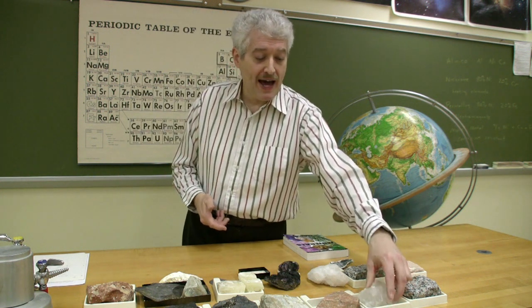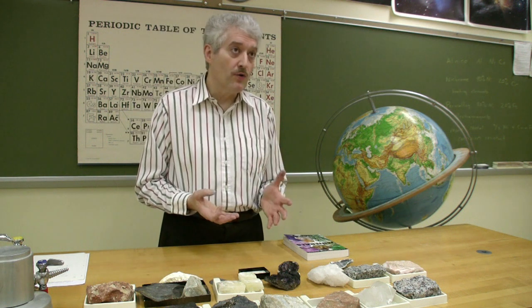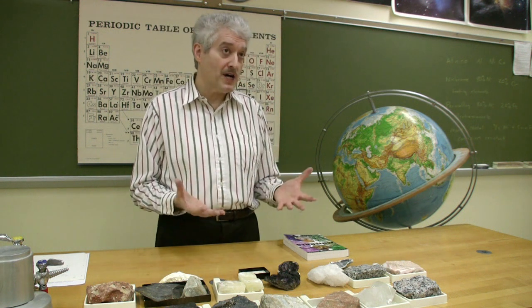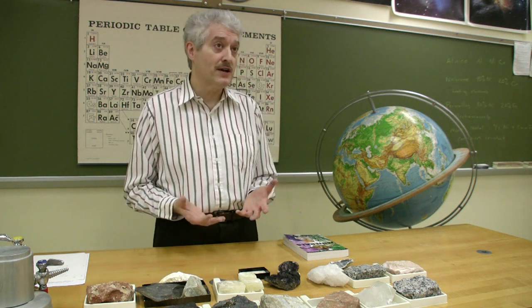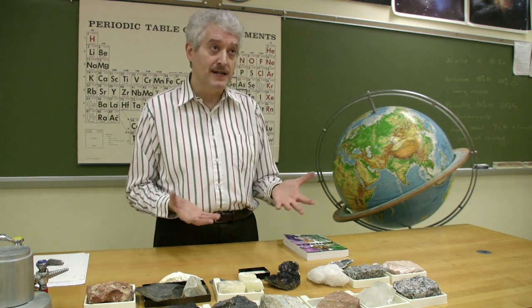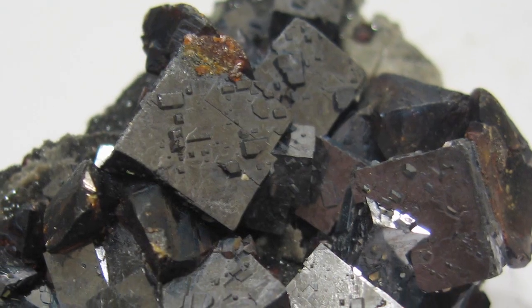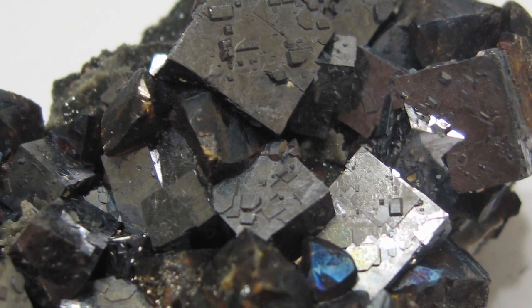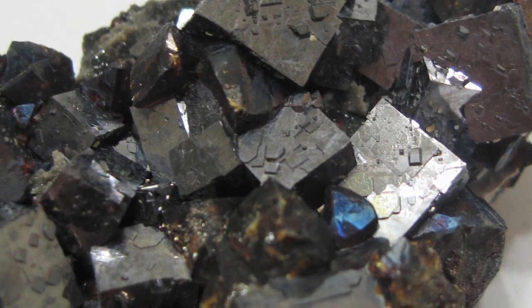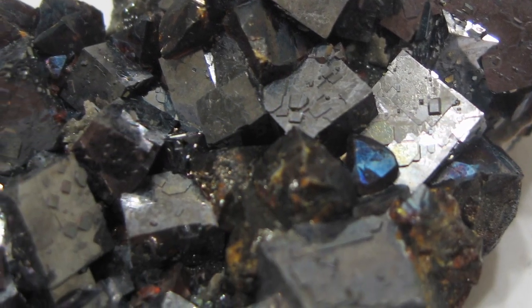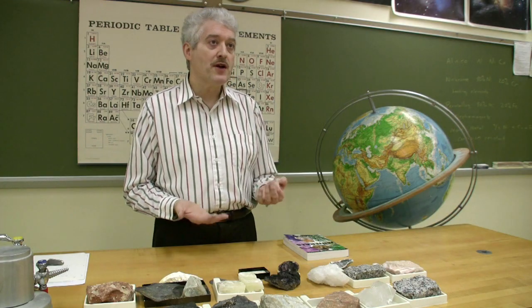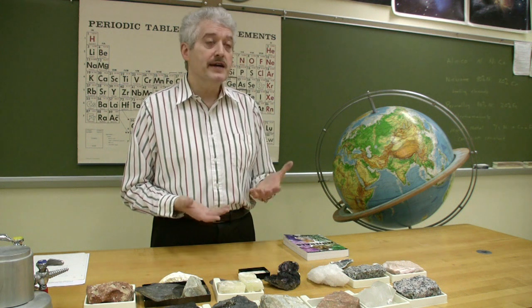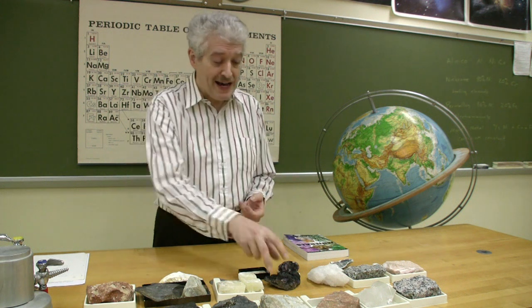Another thing we look at is density. If you have a mineral that has a high metal content — for example, galena, a lead ore — it's going to be very, very hefty, very dense, compared to another mineral of the same size.